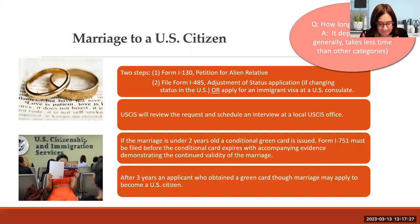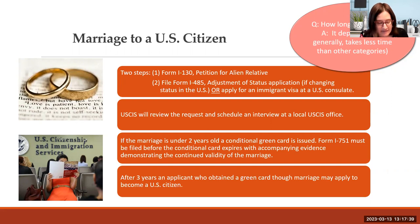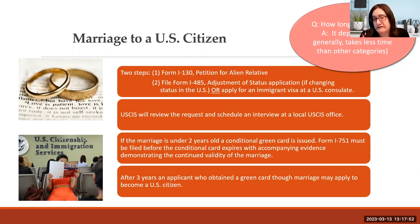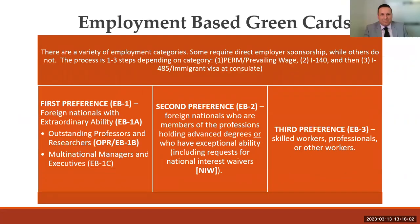Students and scholars often also have questions about how a marriage-based application might affect their F-1, J-1, or H-1B status. We're always careful to provide only general information about immigrant or non-immigrant intent, but for anything related to their personal permanent residence application, we refer them to an immigration attorney. Employment-based green cards is a broad term encompassing both employer-sponsored and self-sponsored green cards. Similar to marriage-based, the process involves one to three steps depending on the category.